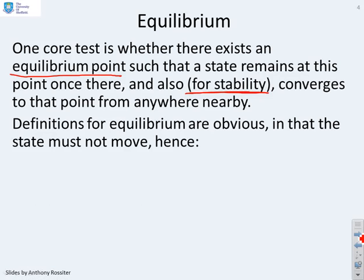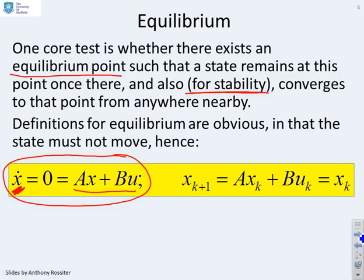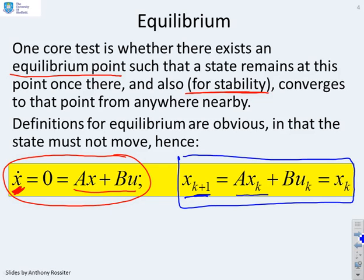The definitions for equilibrium are obvious in that the state must not move. If we take a continuous time state-space model, then assuming the state is at the equilibrium point — which I've taken to be the origin for convenience — x dot must be zero, i.e. the state must not be moving, so the state derivative has to be zero. That means Ax plus Bu must be zero. Similarly, for a discrete system, you have an update equation xk+1 equals Axk plus Buk. If you're at an equilibrium point, the new state must be the same as the current state, and therefore you end up with a condition Axk plus Buk equals xk, which defines the equilibrium.